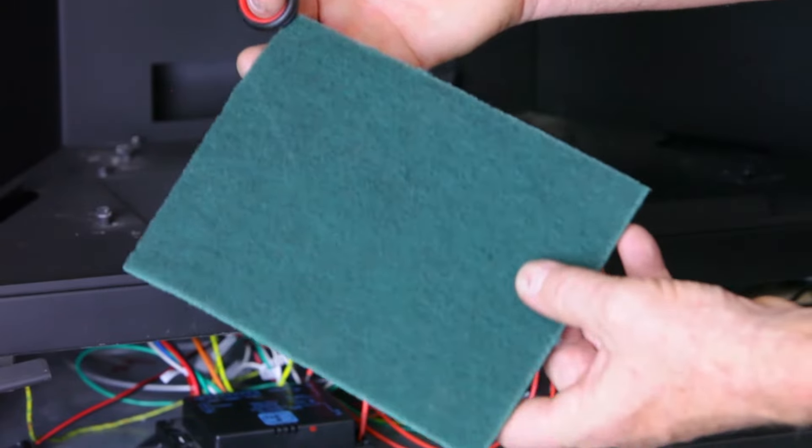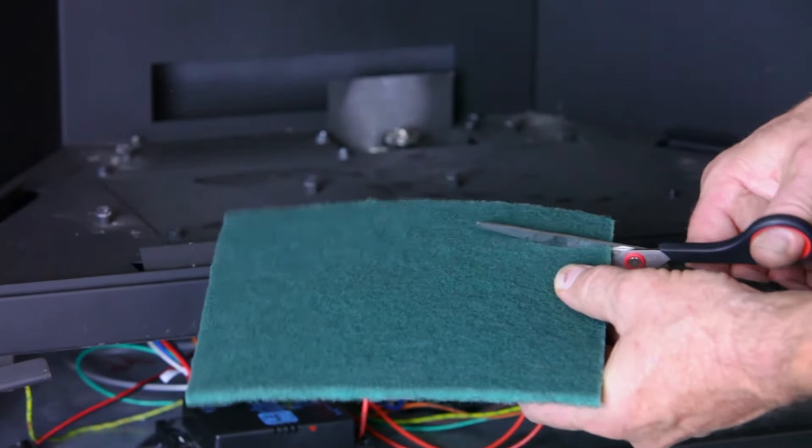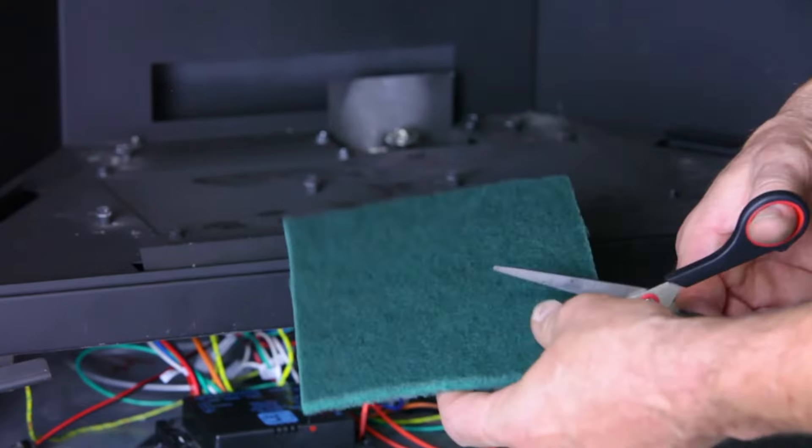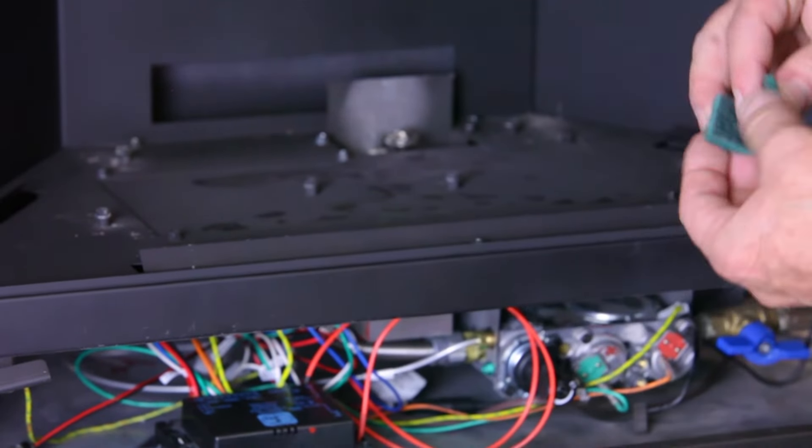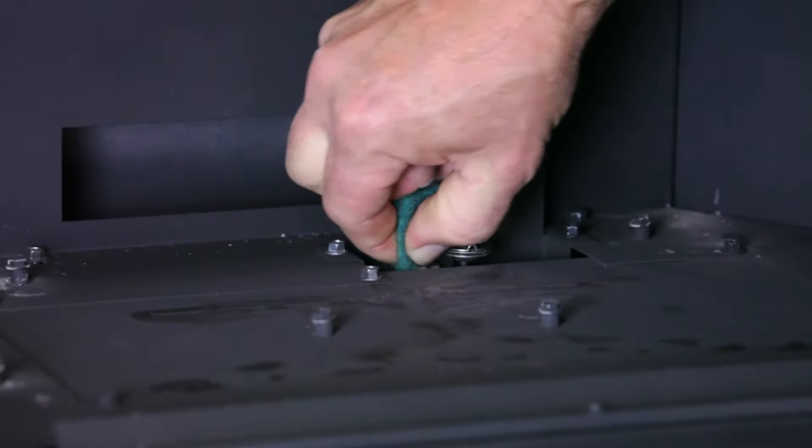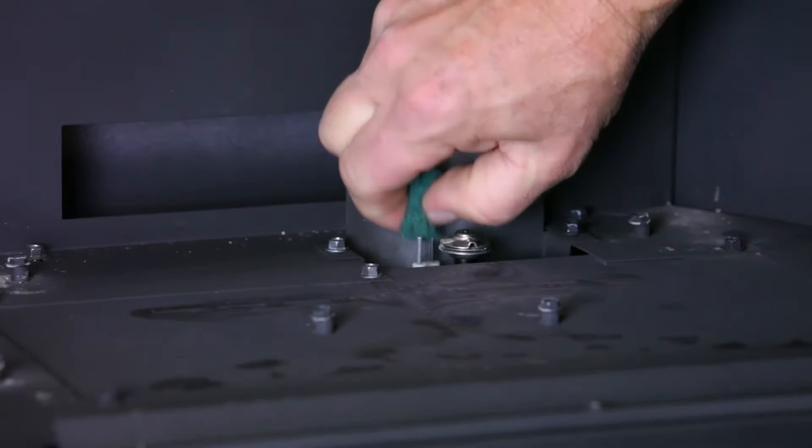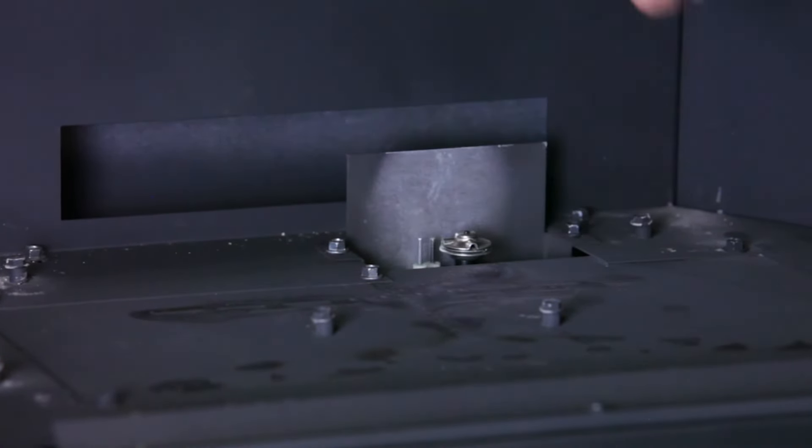Start by cutting a small swatch from a green scotch bright pad to bend around the sensor. Carefully scuff all around the pilot sensor, removing any buildup.